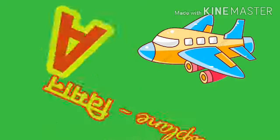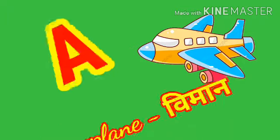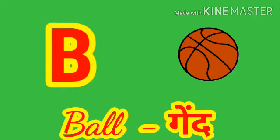A for aeroplane, aeroplane means hawai jahaz. B for ball, ball means gend. C for camera,